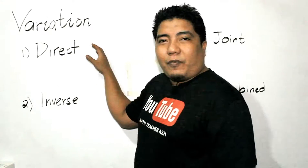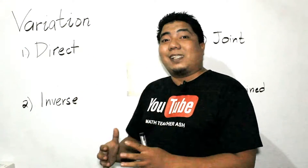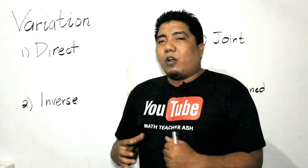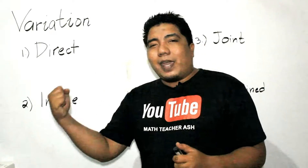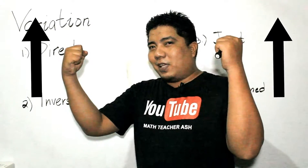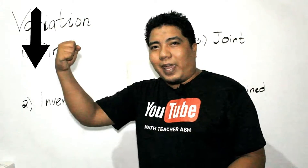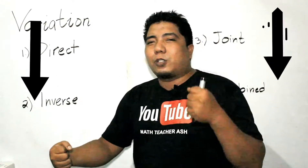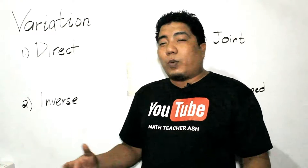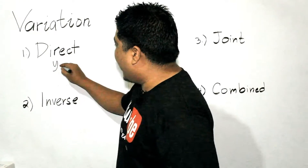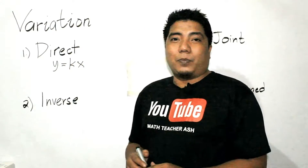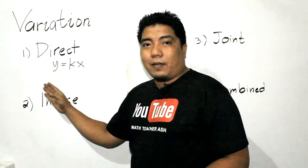For direct variation, the relationship is direct: when x increases, y also increases; when x decreases, y also decreases. We represent that with the equation y is equal to kx.